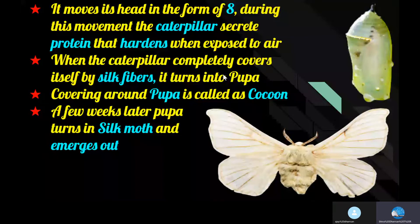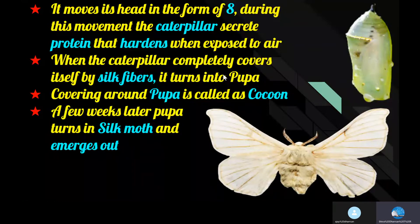Soon the caterpillar completely covers itself with silk fibers and turns into a pupa. This covering around the pupa is called a cocoon. The further development of the pupa continues inside the cocoon. A few weeks later, a fully formed moth emerges out of the cocoon. The female moth then lays 400 to 500 eggs and another life cycle begins.